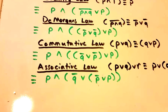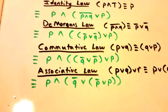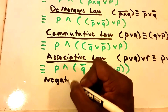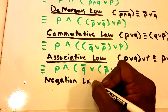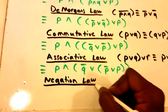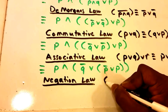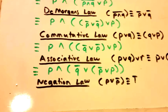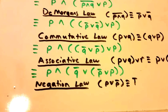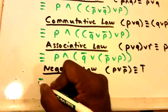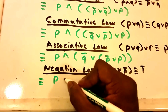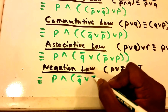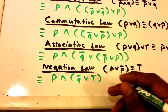Now let's apply the Negation Law again. The Negation Law says P∨¬P is logically equivalent to True. So rewriting our equation, we get: P ∧ (¬Q∨True).